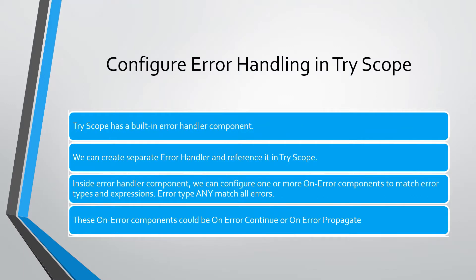Inside the Try Scope error handler, we can configure one or more on-error components, like on-error continue and on-error propagate. We configure these on-error components to match error types and expressions, and error type 'any' matches all errors.